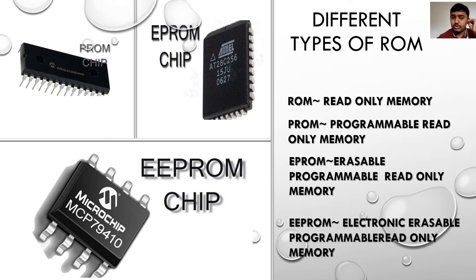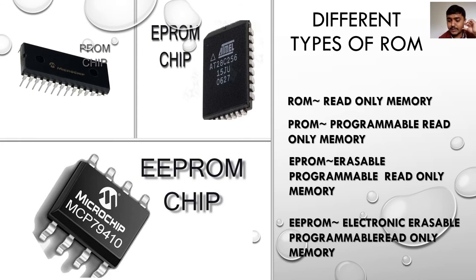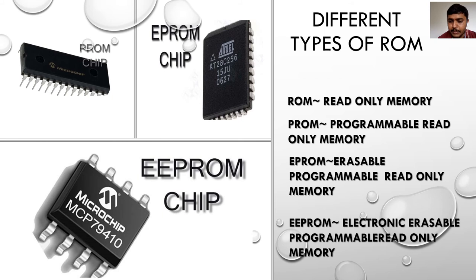Just as a human being needs proper bones to stand, a computer system needs some basic installed things to run. Those basic installed things are present in the ROM. ROM means Read Only Memory. The data burned into ROM at manufacture time cannot be erased — it can only be read.